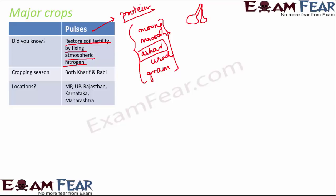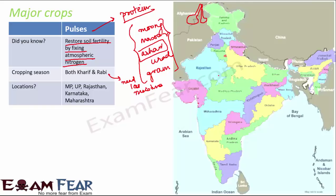Pulses can be both kharif and rabi crops depending on the type and region. Generally they need less moisture. India is one of the largest producers and consumers of pulses. Major producing states include Uttar Pradesh, Madhya Pradesh, Rajasthan, Karnataka, and Maharashtra.